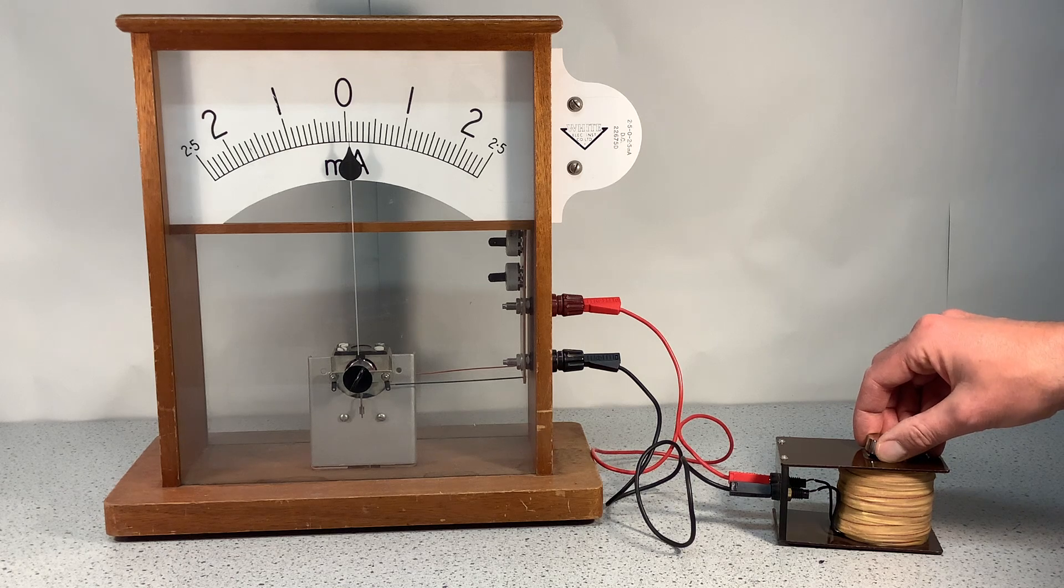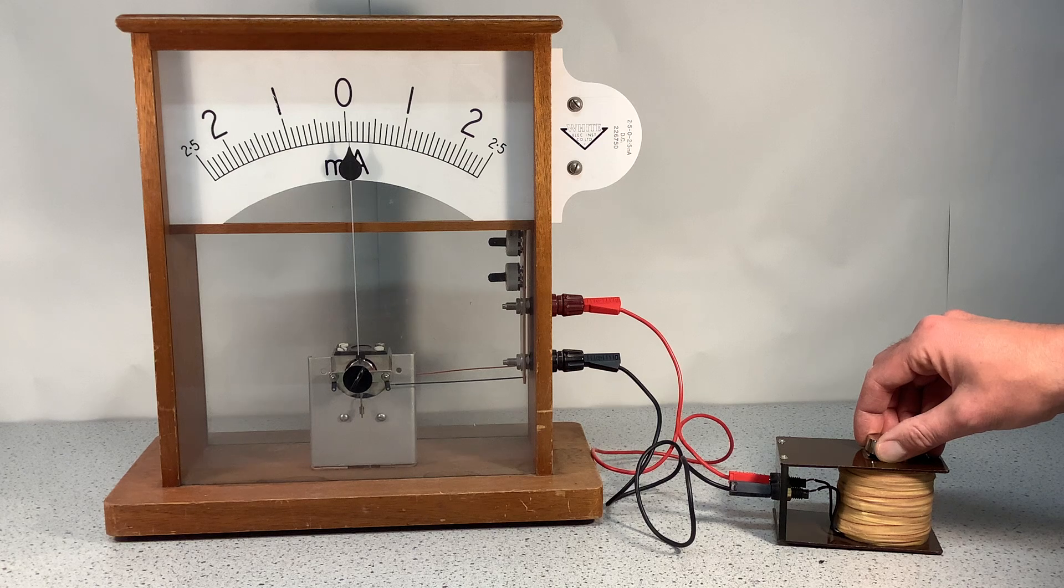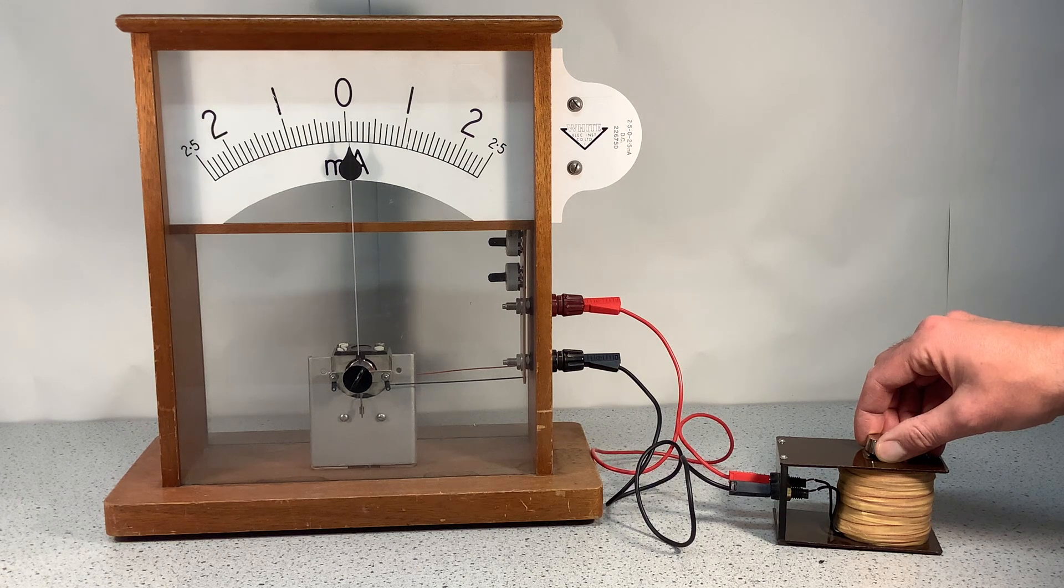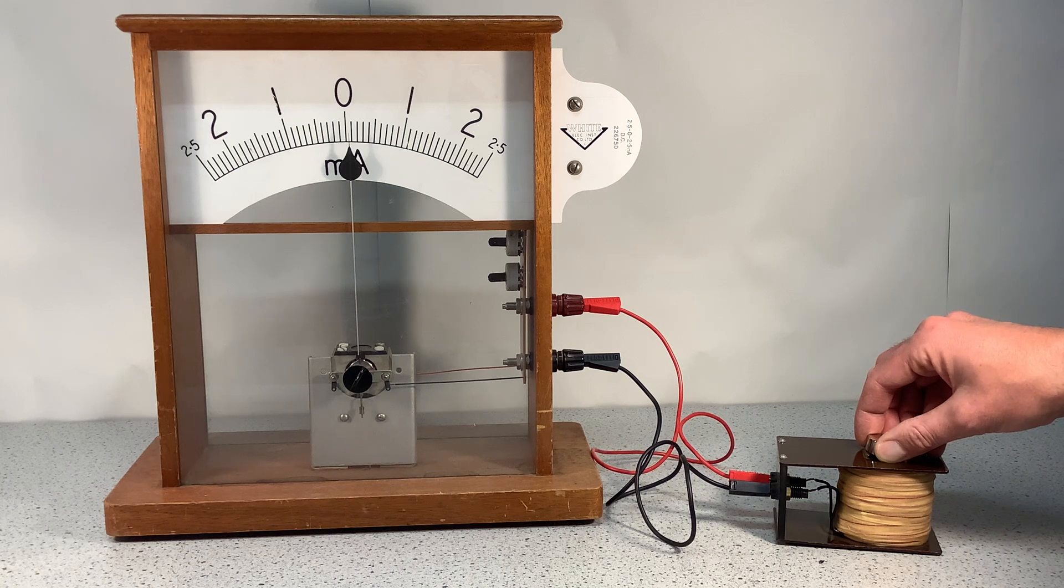Now, the next thing that I'd like you to think about is now that the magnet is stationary, what is happening? Hopefully you can see that no current is flowing because no potential difference is induced.